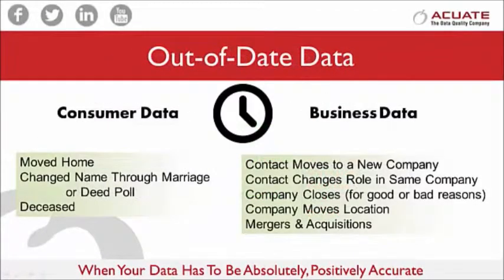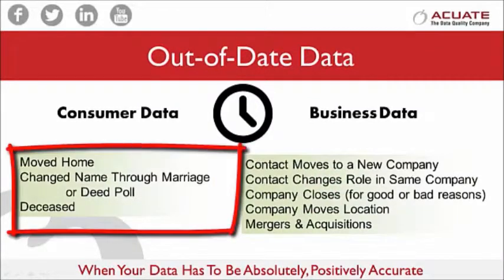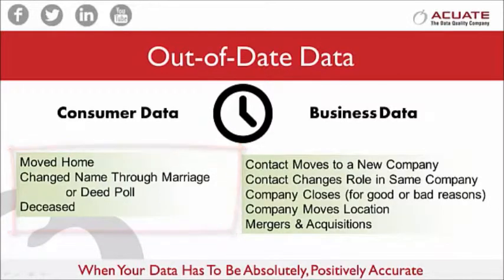An even bigger problem is data timing out. For example, with consumer data, a person may move home, they may change their name through marriage or deed poll, or there may be a deceased contact.